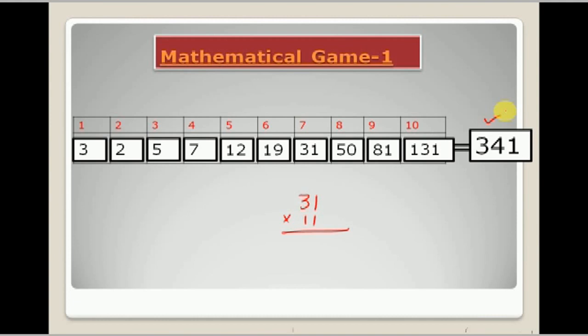Now how can you multiply by 11 quickly? There is a method. Now 3 plus 1 is equal to 4. Write 4 between these 2 digits, you will get 341.